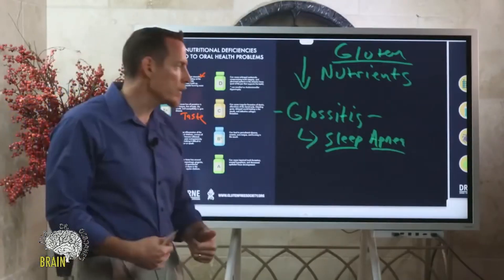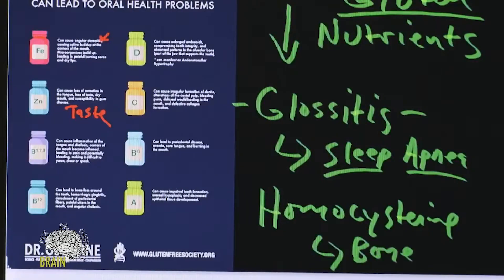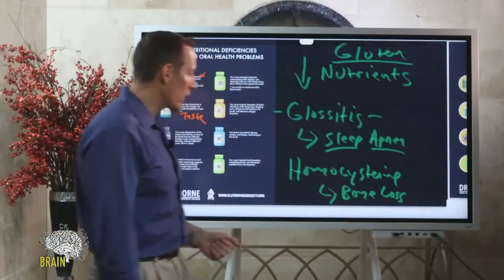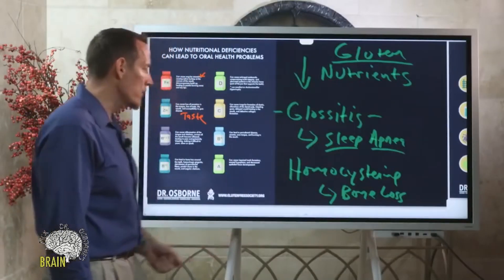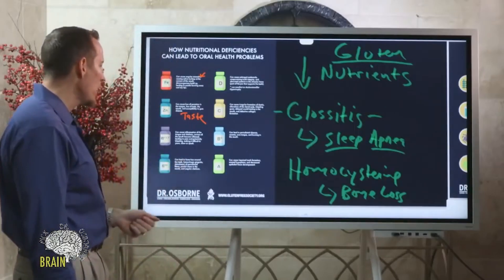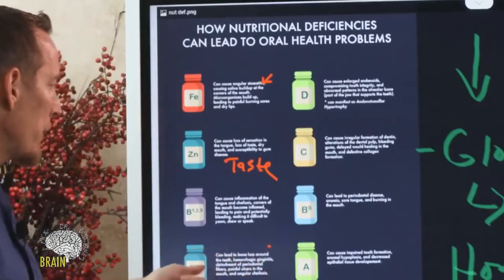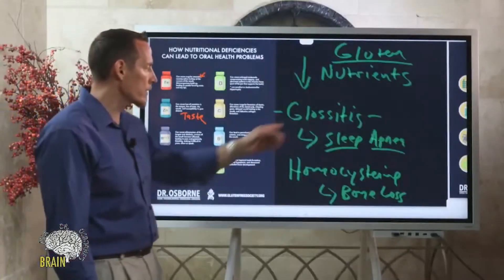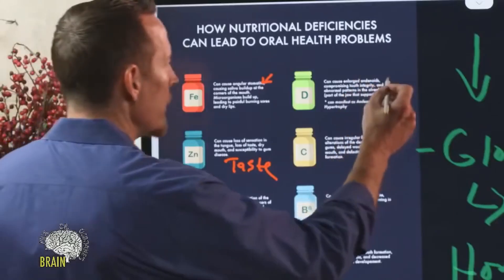B12 deficiency can also cause glossitis, and it can lead to bone loss around the teeth. B12 deficiency can elevate a chemical called homocysteine, and elevated homocysteine leads to bone loss — it's a recognized risk factor for both bone loss and heart disease. B12 deficiency can increase homocysteine, causing more decay in the bone of the teeth. B12 is also important to form elements of teeth, contributing to periodontal disease, and can cause painful aphthous ulcers in the mouth.